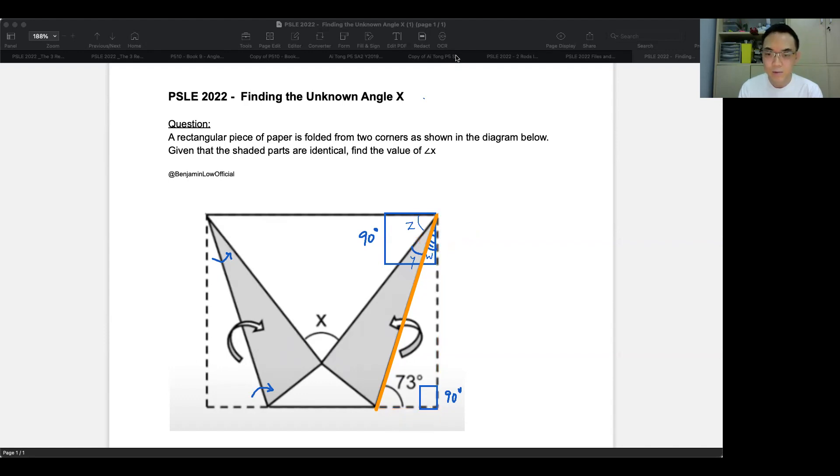So what I'm going to do now is, let me write this down, angle W, which is also equal to angle Y,